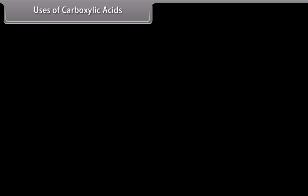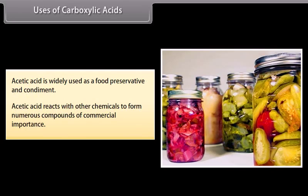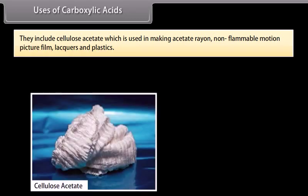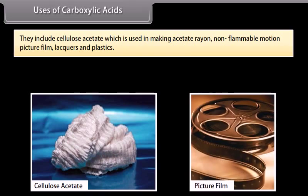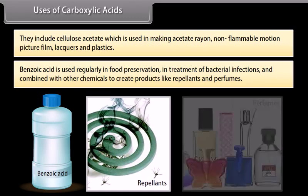Uses of carboxylic acids: acetic acid is widely used as a food preservative and condiment. Acetic acid reacts with other chemicals to form numerous compounds of commercial importance, including cellulose acetate, which is used in making acetate rayon, non-flammable motion picture film, lacquers, and plastics. Benzoic acid is used regularly in food preservation, in treatment of bacterial infections, and combined with other chemicals to create products like repellents and perfumes.